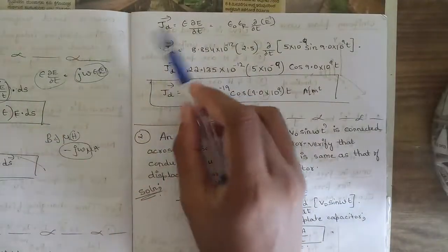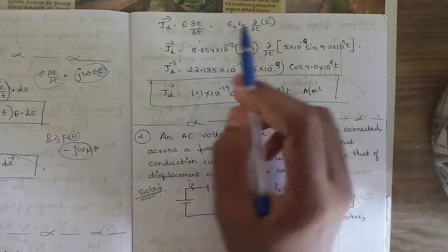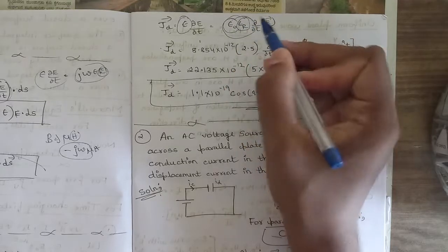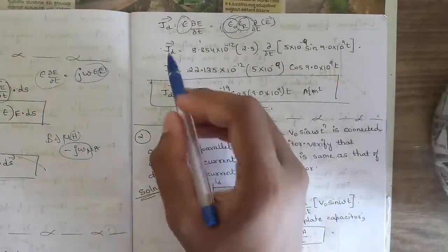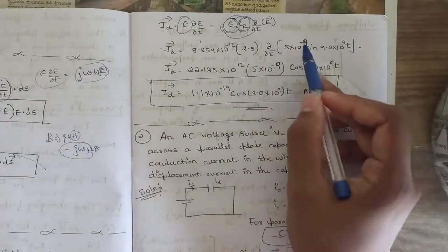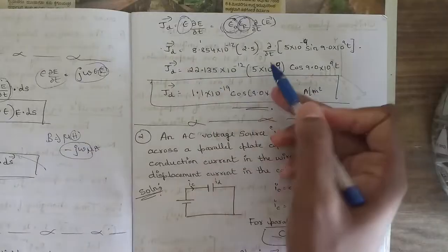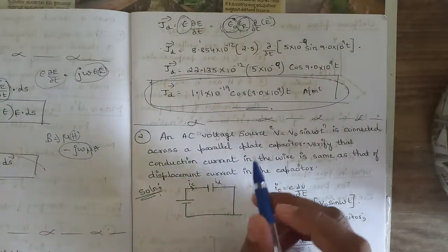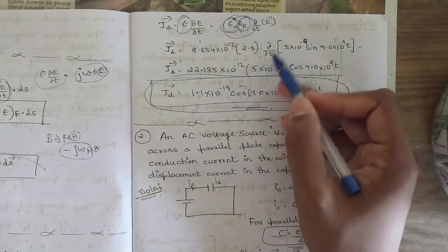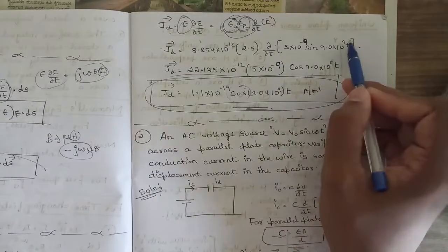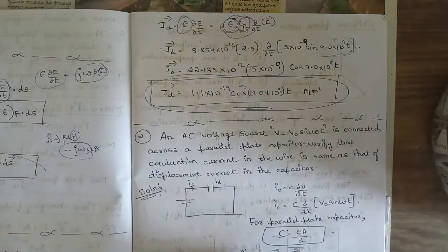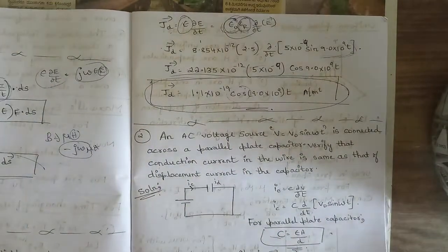For displacement current density, Jd = ε·∂E/∂t, where ε = ε₀·εr = 8.854×10⁻¹² × 2.5. Differentiating E = 5×10⁻⁶ sin(9×10⁹t) with respect to t gives cos(9×10⁹t) with coefficient 9×10⁹. Computing the full expression gives Jd = 1.1×10⁻¹⁹ cos(9×10⁹t) A/m². The cosine appears because differentiating sine gives cosine, with the coefficient 9×10⁹ from the chain rule.